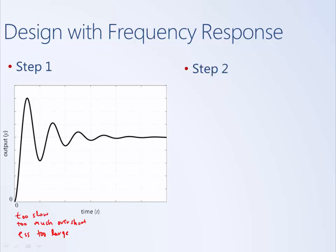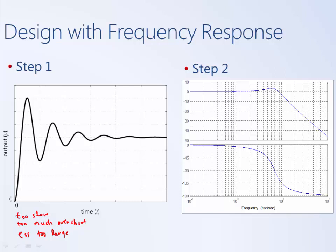The second step is to plot the system's open loop Bode plot. Looking at it, we get a sense of how we need to reshape it to address the deficiencies identified from the time response. Since the system is too slow, we recall that gain crossover frequency is an indication of speed of response, so we want to push the gain crossover frequency out to a higher frequency.